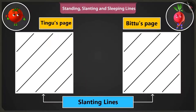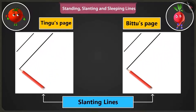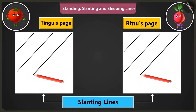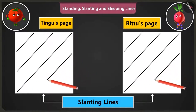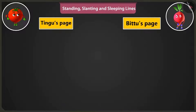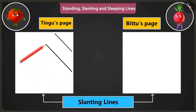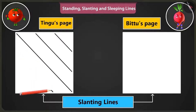Wow, this is so much fun. Now slanting lines are to be drawn from the top right side of the page towards the bottom like this. Just see. Now my lines are turning out perfectly fine. You are doing very well. Now the slanting lines have to start from the bottom right corner of the page and are drawn from the right bottom to the top in this manner.